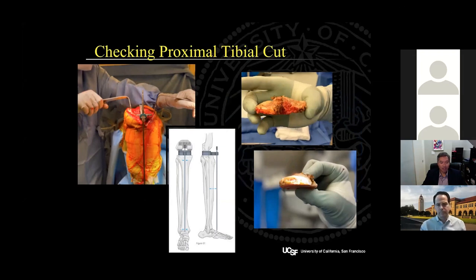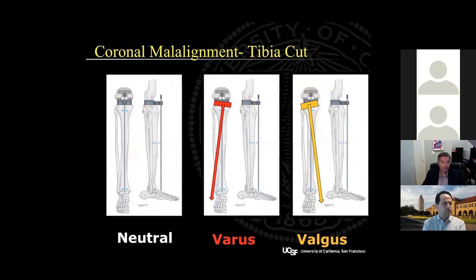After measuring thrice and cutting once, I'll do the double check, which consists of looking at the resected bone from the front and the side and confirming that it's consistent with my preoperative plan. Then you can use a drop rod to see you've achieved your coronal and sagittal goals. If you've inadvertently cut the tibia in varus, the drop rod will head towards the lateral malleolus; conversely, if you've cut it in valgus, the drop rod heads medially. This can be corroborated by the bone wafer you removed and identifying a deeper cut on the medial or lateral side respectively than what you planned.